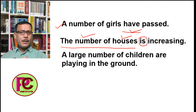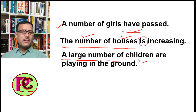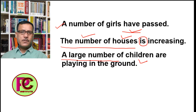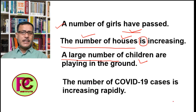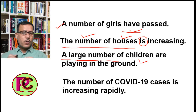'A large number of children are playing' — 'a large number of' means 'a very large quantity', so 'a large number of' plus plural noun takes a plural verb. Why? Because 'a large number of children' is the plural subject and the verb must be plural, not singular. Another example: 'The number of COVID-19 cases is increasing rapidly.'